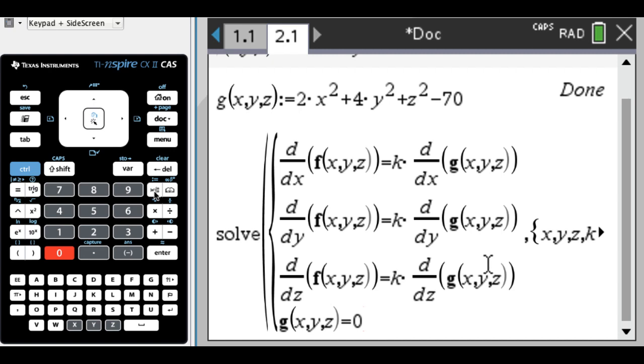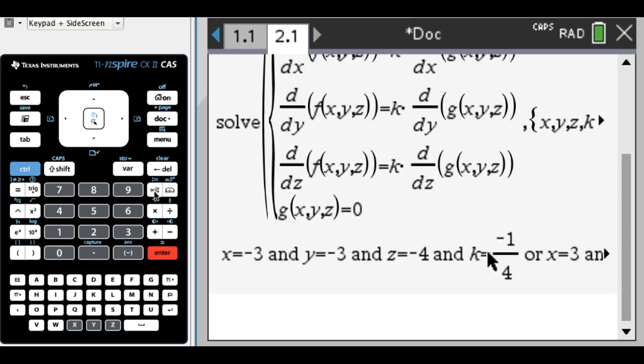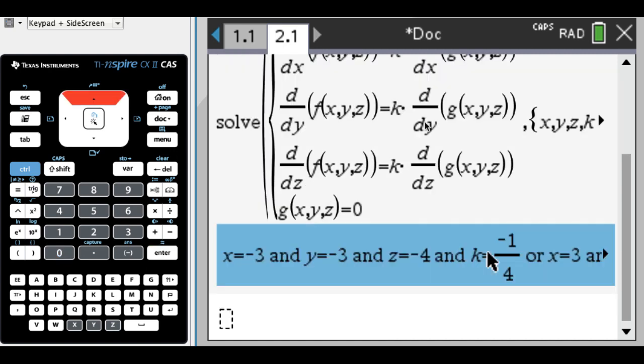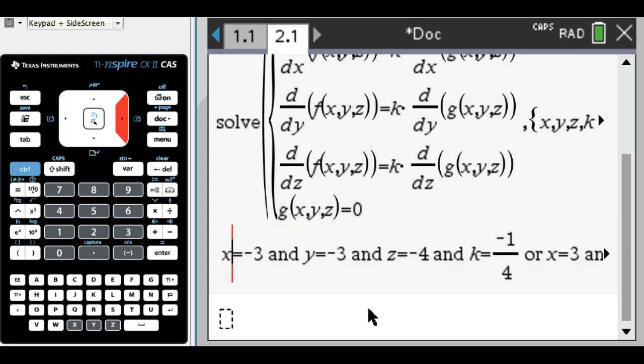And we're solving for x, y, z, and k. Enter. So I get negative three, negative three, negative four, and so that's one of the options, and three, three, four, and that's the other option.